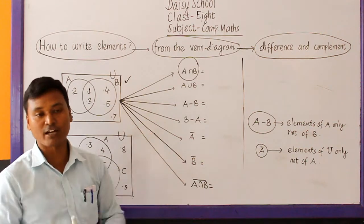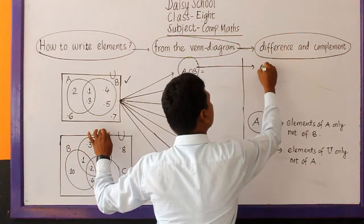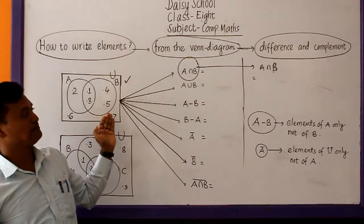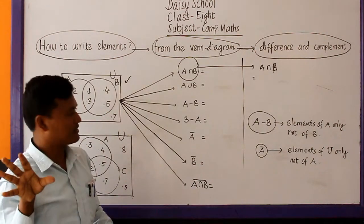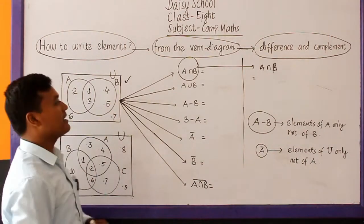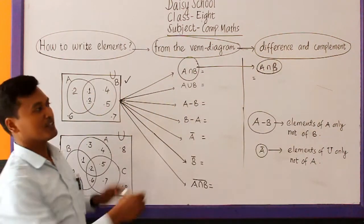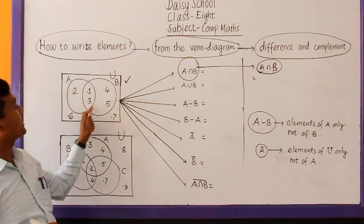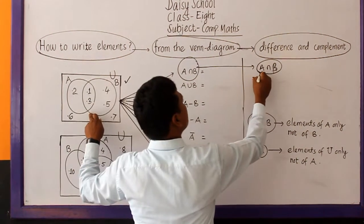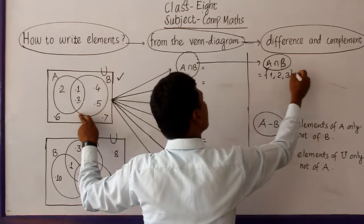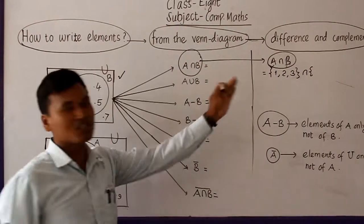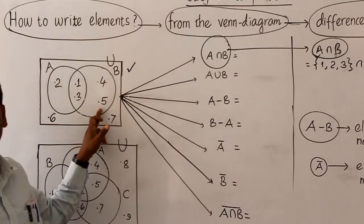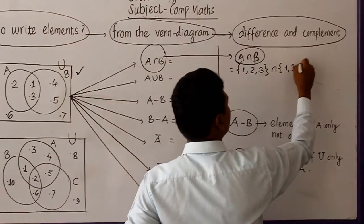But if you do not know how to write directly, we have one idea. If we have to write the elements of A intersection B, write the elements of A first from the given Venn diagram. Elements of A — inside A we have the elements 1, 2 and 3. Then write the symbol intersection, then we have set B. Write the elements of set B — inside B we have the elements 1, 3, 4 and 5.